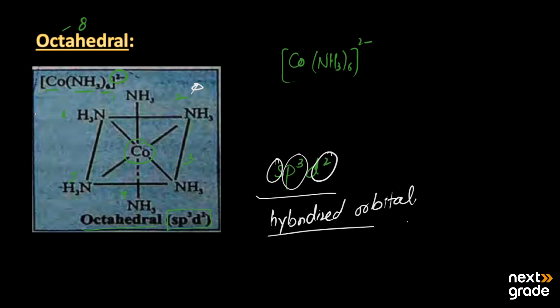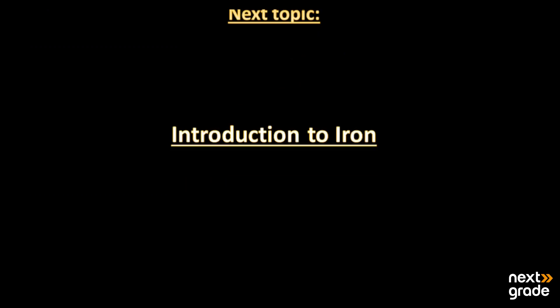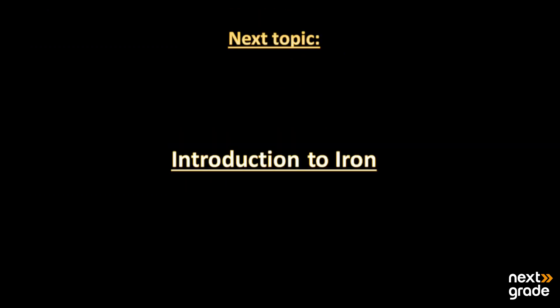So this was today's topic — I hope you understand. If you have any queries, ask in the comment section. Try to find more examples of octahedral, tetrahedral, and trigonal bipyramidal shapes of different complexes. The next topic we will discuss is an introduction to iron — its symbol is Fe. Keep learning and have a good day.